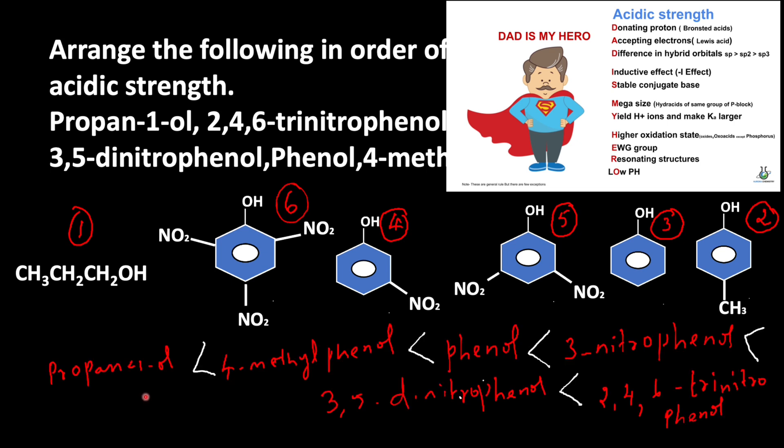So the increasing order of acidic strength of the given compounds is propanol, 4-methylphenol, phenol, 3-nitrophenol, 3,5-dinitrophenol, then 2,4,6-trinitrophenol.